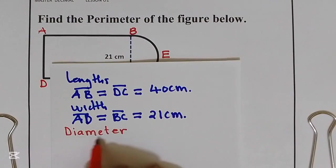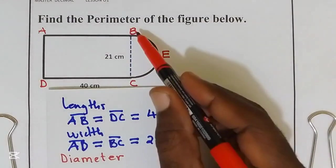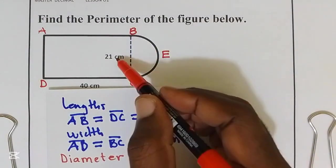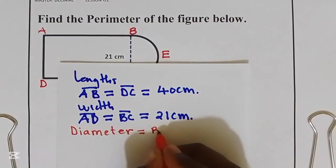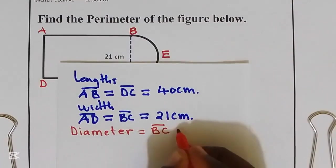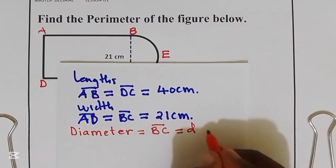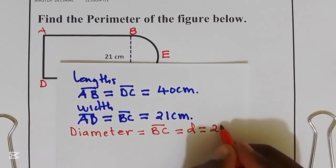Also, we have diameter which is BC equal to 21 centimeters.